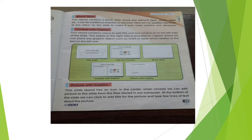Content with caption layout contains space to add title and text content on the left side of the slide. The space on the right side is provided for the caption where you can place any graphic such as chart or table. The first picture shows click to add title; the second picture shows the title slide with two rectangle boxes — add title and subtitle.